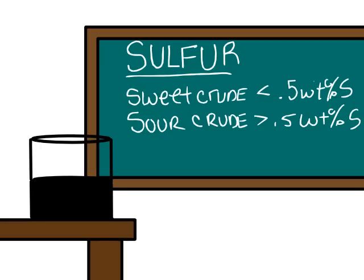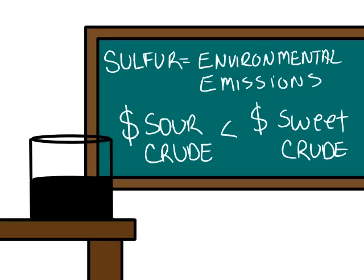Sulfur is another major factor considered when evaluating crudes. Crudes are classified as sweet if their sulfur content is less than 0.58%. Crudes with sulfur content higher than this are referred to as sour crudes.